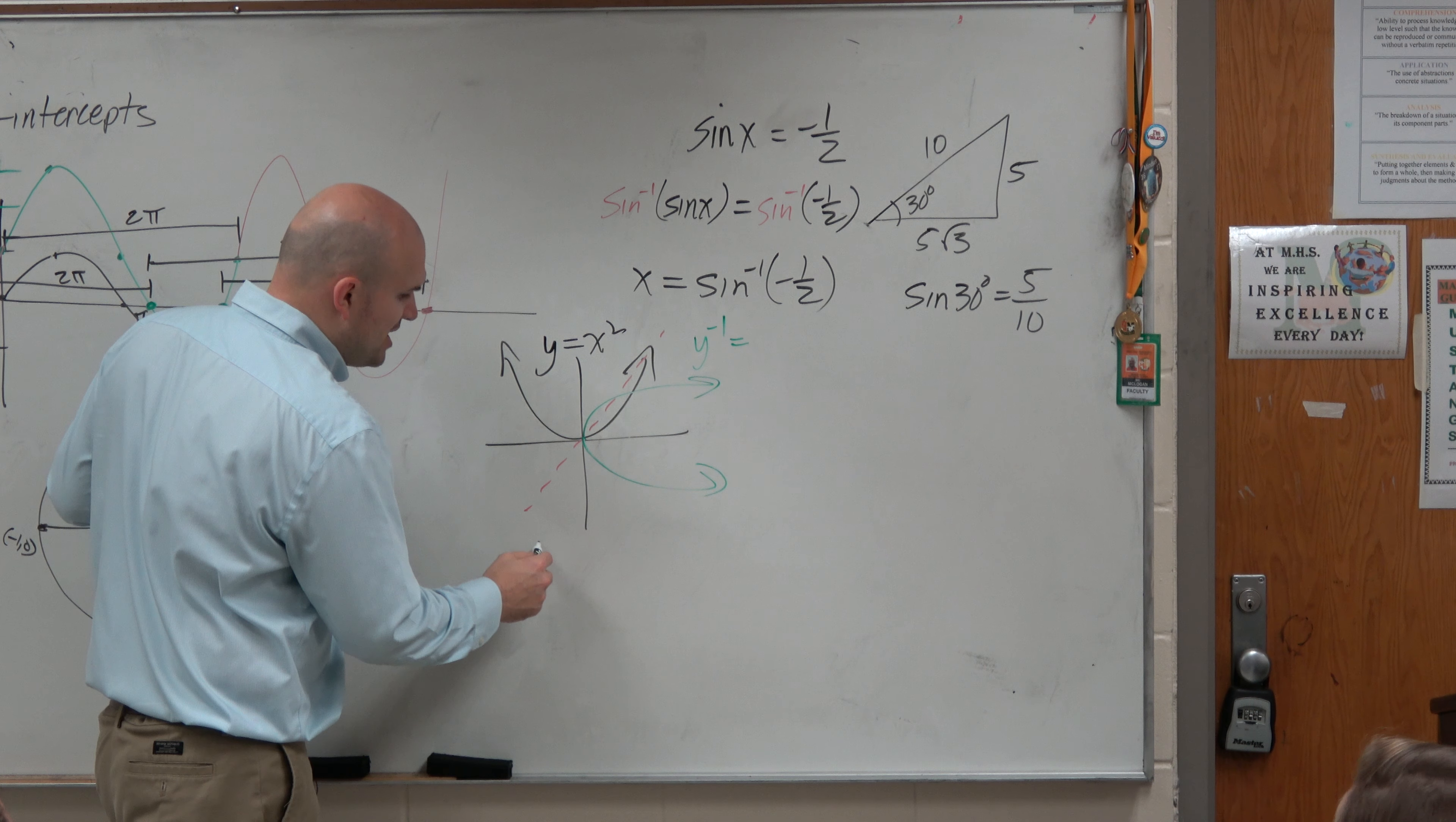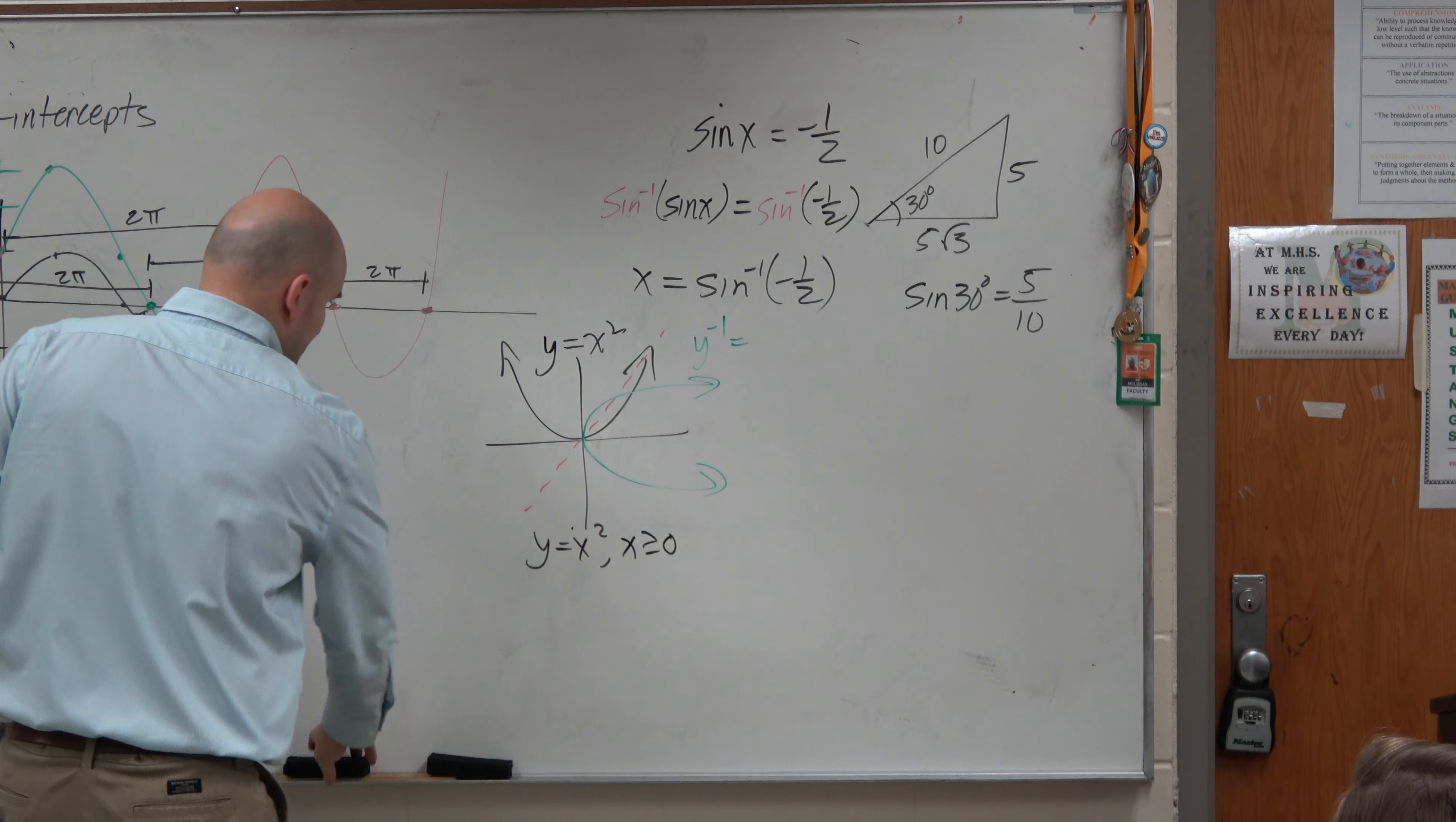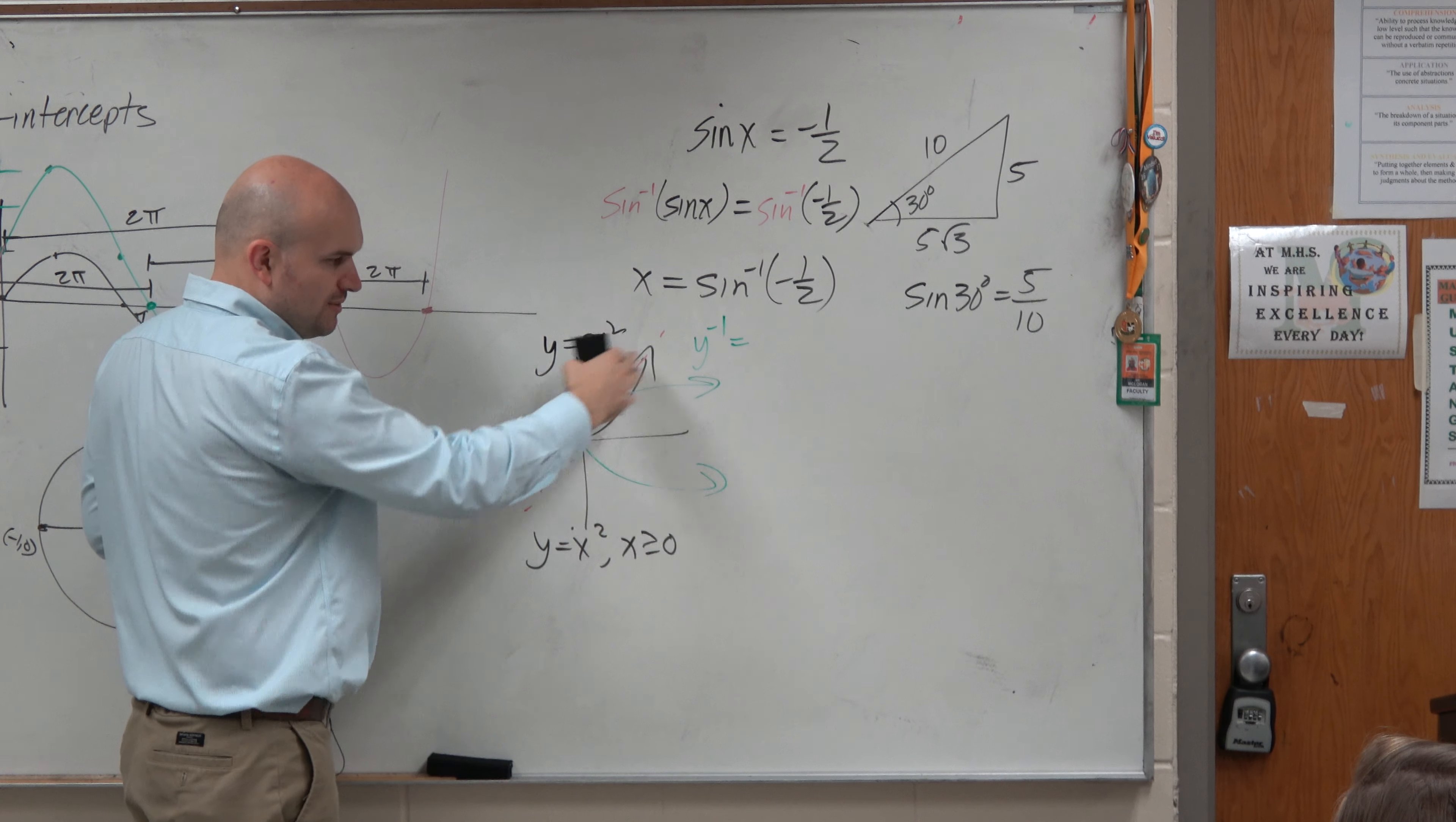For instance, I said, well, why don't we just do this? y equals x squared, where x is greater than or equal to 0. So what that did is that eliminated the negative version of the graph. And now you can see that passes the horizontal line test, so when I invert it,